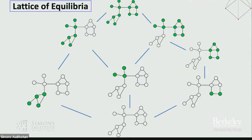Going back to that graph, there are a bunch of different equilibria where everybody who adopts has at least 40% of their friends adopting, and all those who don't have fewer than 40% of their friends adopting. There's a lattice structure to those equilibria — the set of equilibria in that particular game form a lattice. This is the lattice for that particular network and threshold.